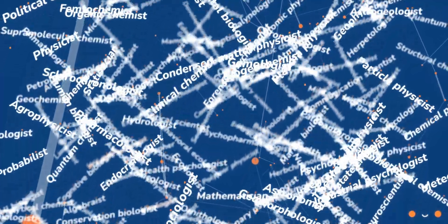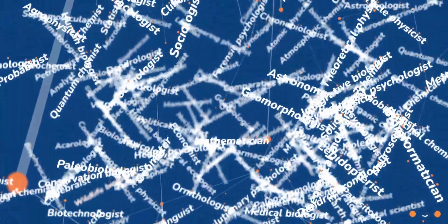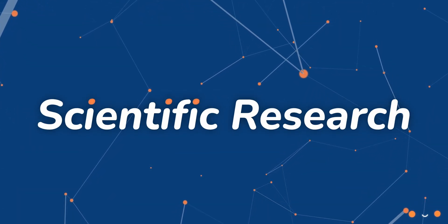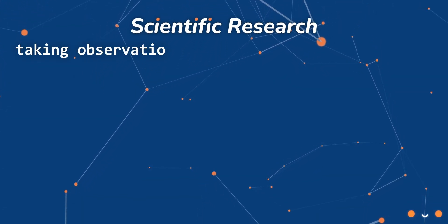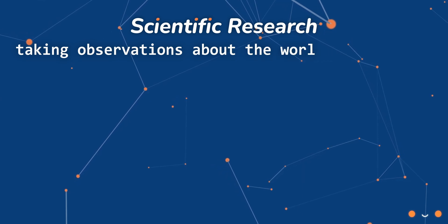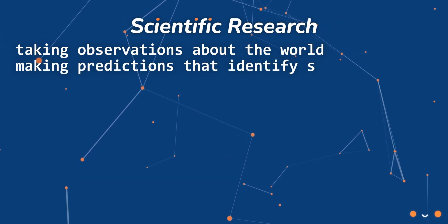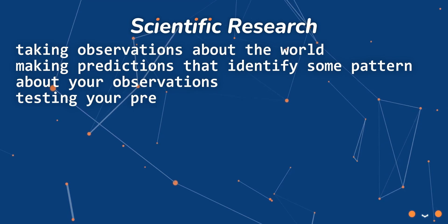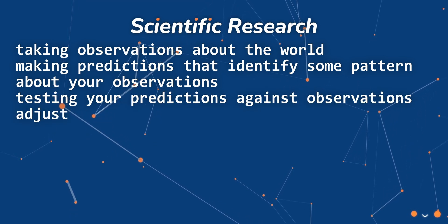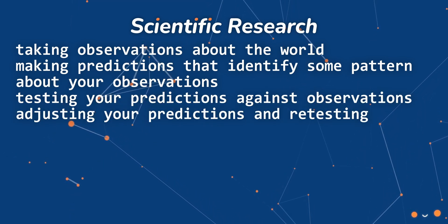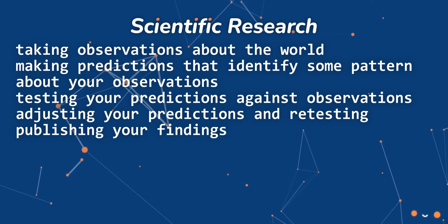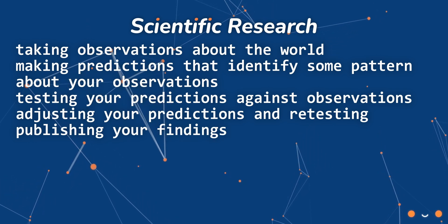Someone who conducts scientific research to advance knowledge in an area of interest is a scientist. Scientific research is the interconnected process of taking observations about the world, making predictions that identify some pattern about those observations, testing those predictions against observations, adjusting your predictions and retesting and publishing your findings. So if you do these things, you are a scientist.